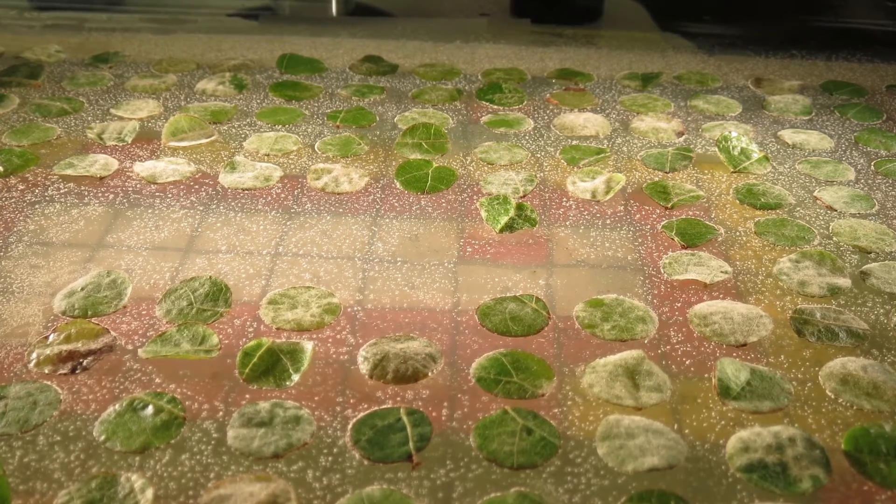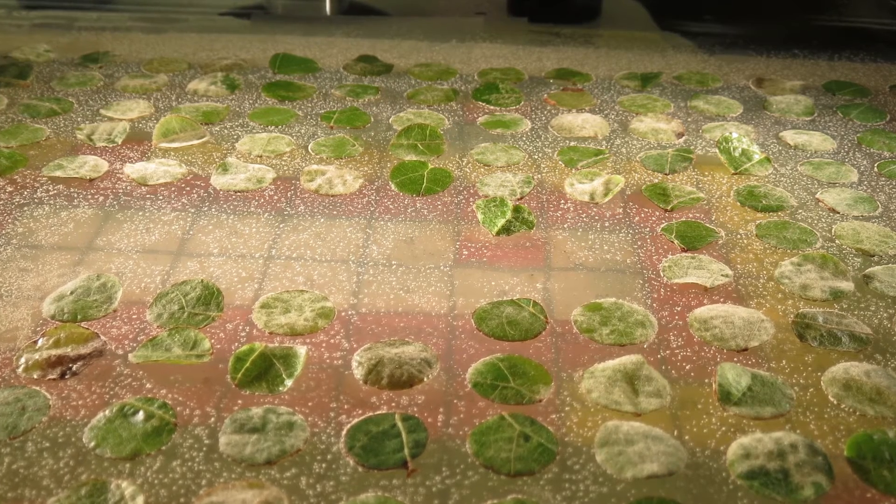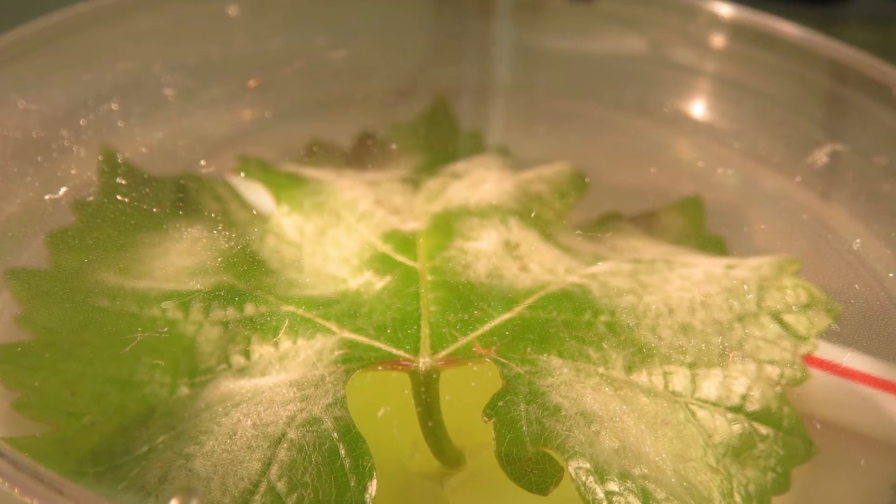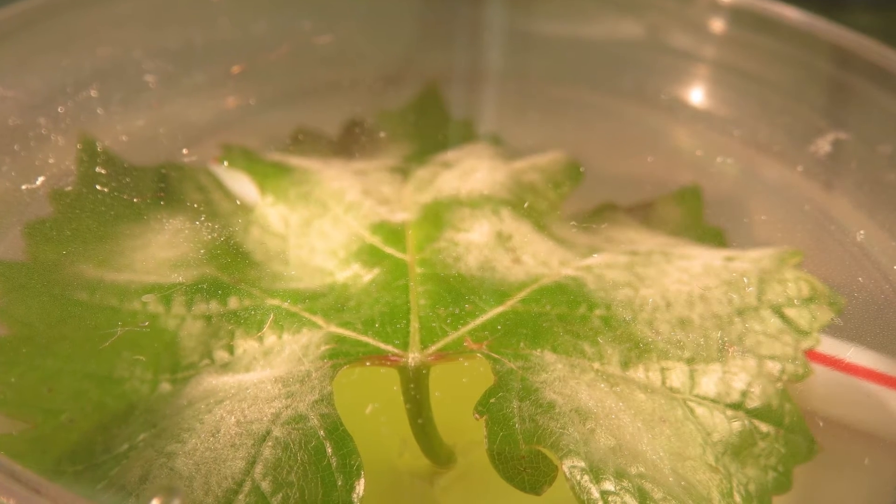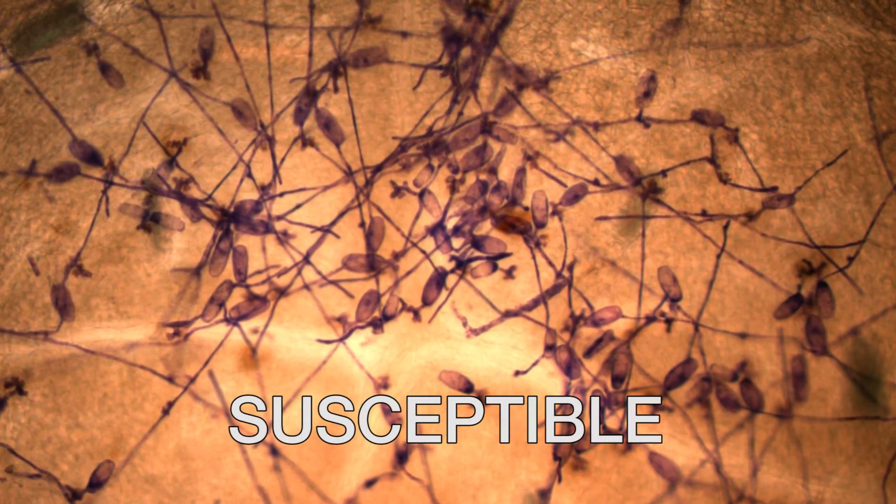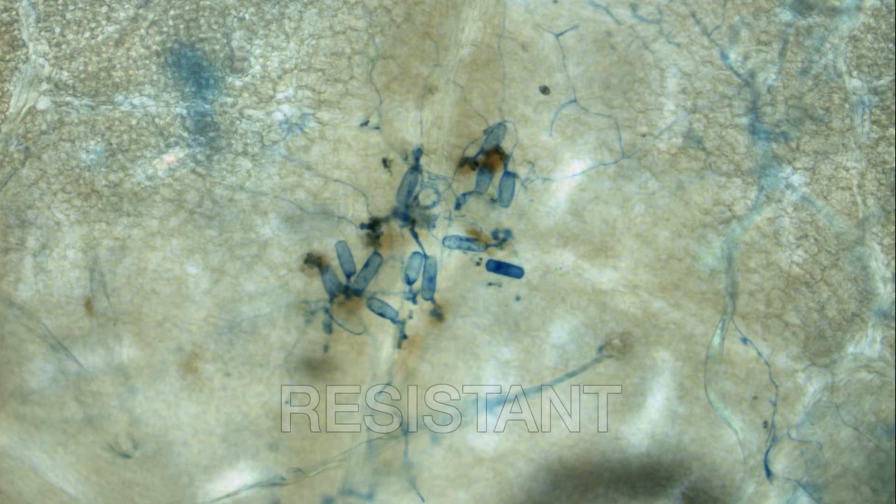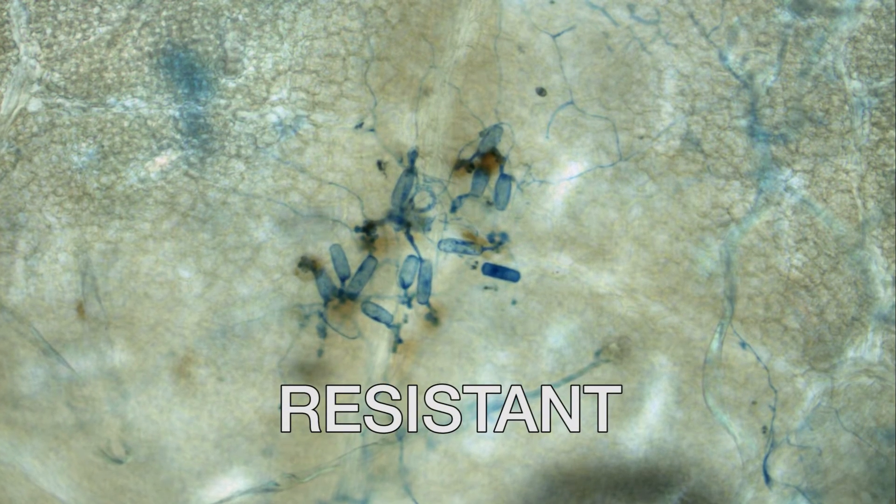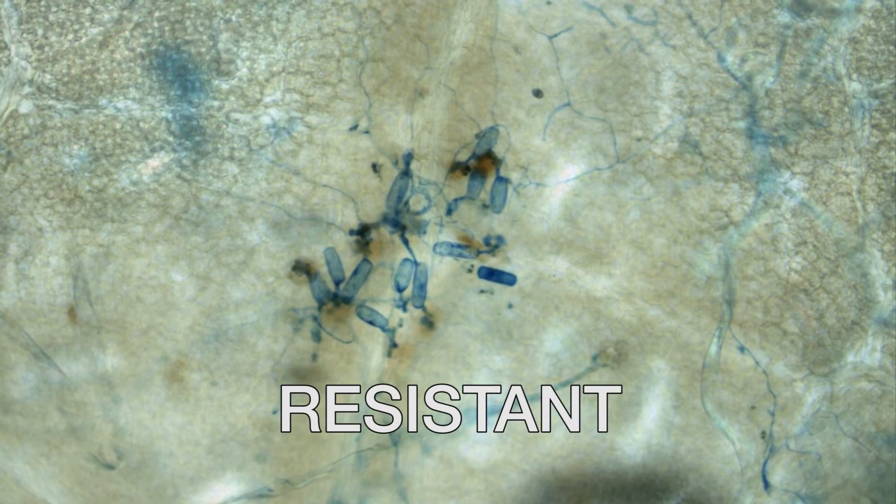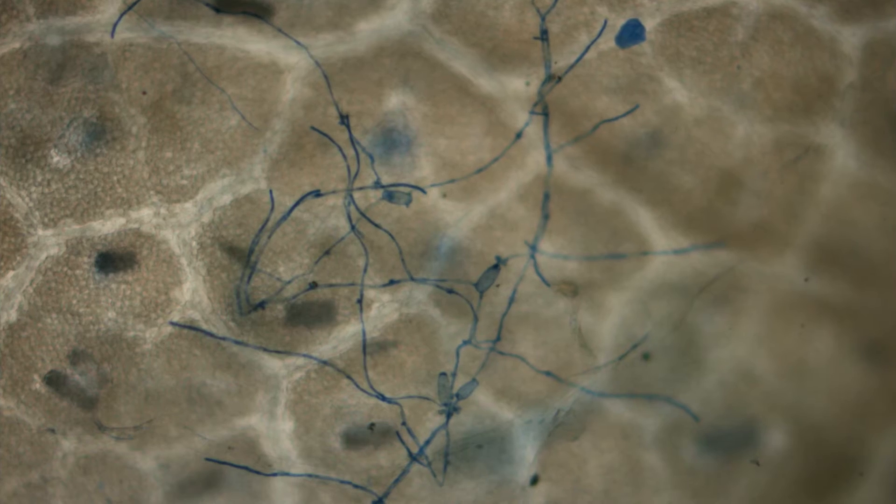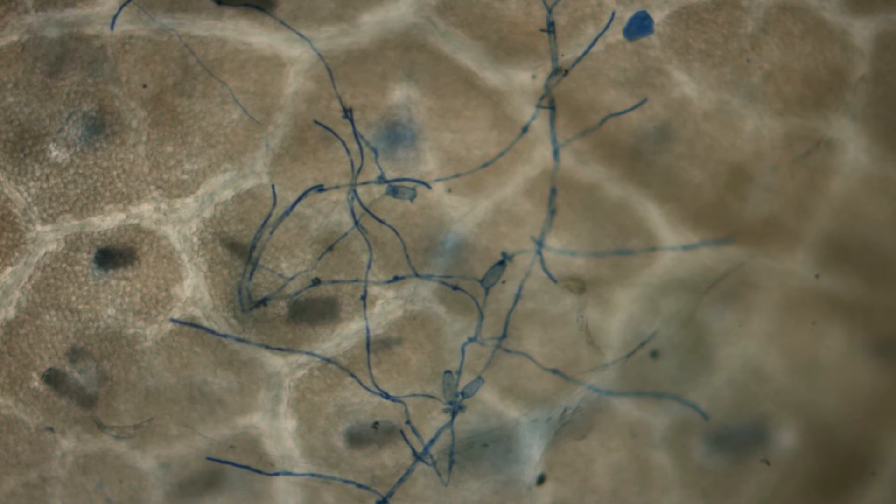In order to do this, we can take the leaf discs that have been inoculated with powdery mildew and look under a microscope and evaluate the developmental stage of the fungus. Based on these observations on the microscope, we're able to determine whether or not the individual leaf is susceptible or resistant to powdery mildew.